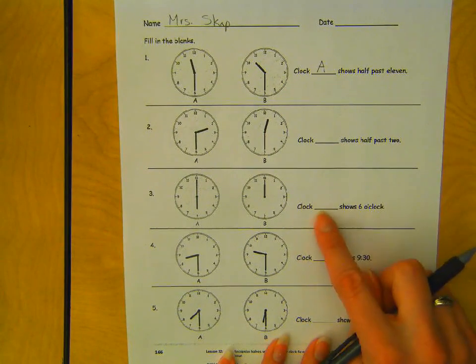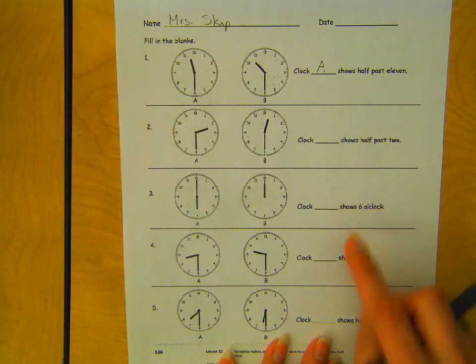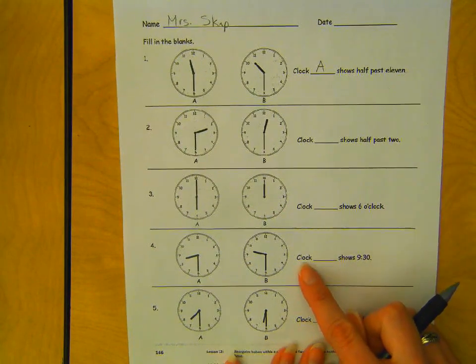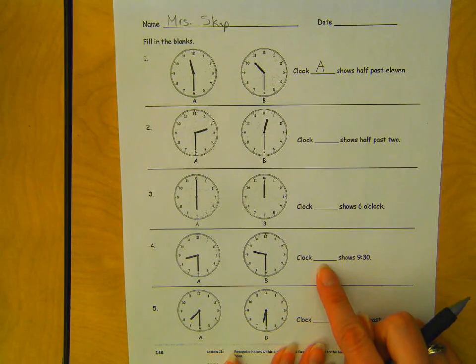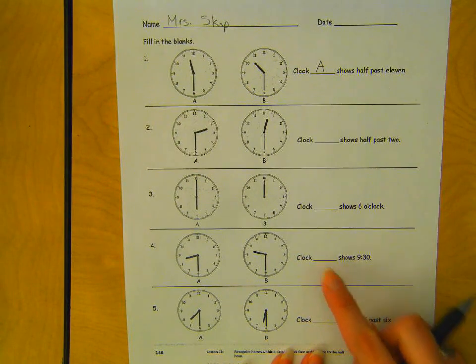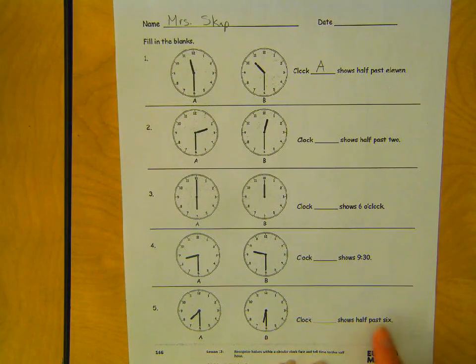Number three, clock blank shows 6 o'clock. Number four, clock blank shows 9:30. Is it A or B that shows 9:30? And number five, clock blank shows half past 6.